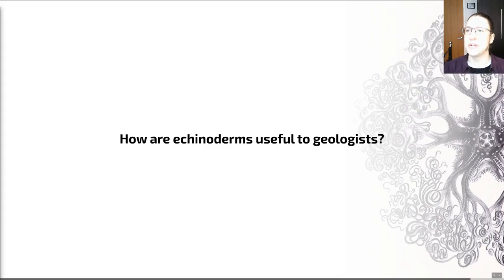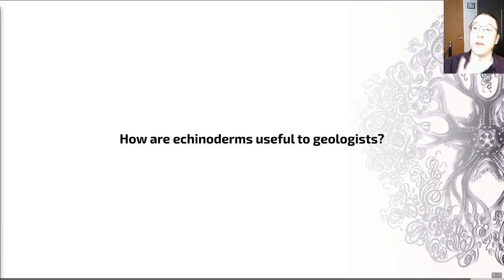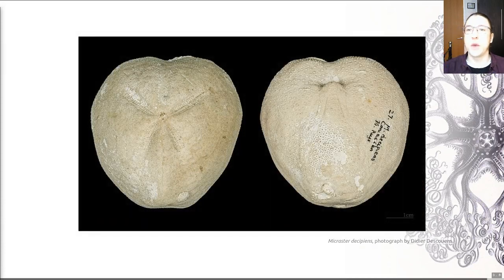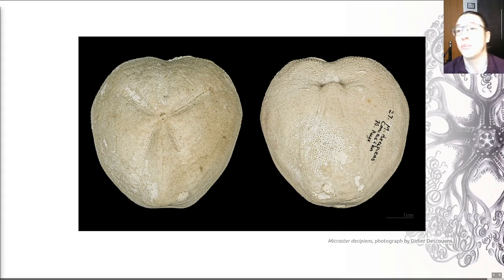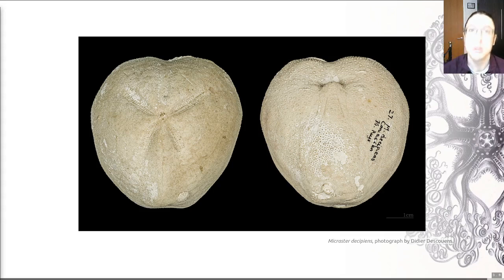I wanted to finish this video by highlighting why the echinoderms are useful to geologists. Because my other two videos were quite long, I've tried to keep this relatively short for you, so we're going to have a quick whiz through. Echinoderms are indicators of their environment of deposition to an extent. They will show you, for example, that you are in a marine environment of deposition because that's where these organisms live. That's useful.